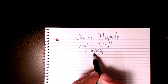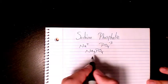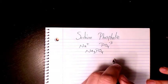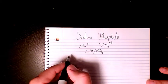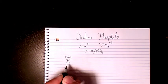Because the three is going to sit here and one is going to sit here. That's why we have it as Na3PO4. So in order to find out the molar mass, we need to list all the elements: sodium, phosphorus, and oxygen.